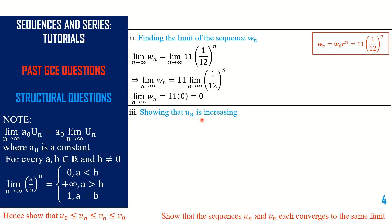Roman III is asking us to show that the sequence u(n) is increasing. In Part 1, we specified how to show that a sequence is increasing: we need to show that u(n+1) − u(n) ≥ 0. If it is monotonically increasing, we put strictly greater than 0. So for increasing, greater than or equal to 0.